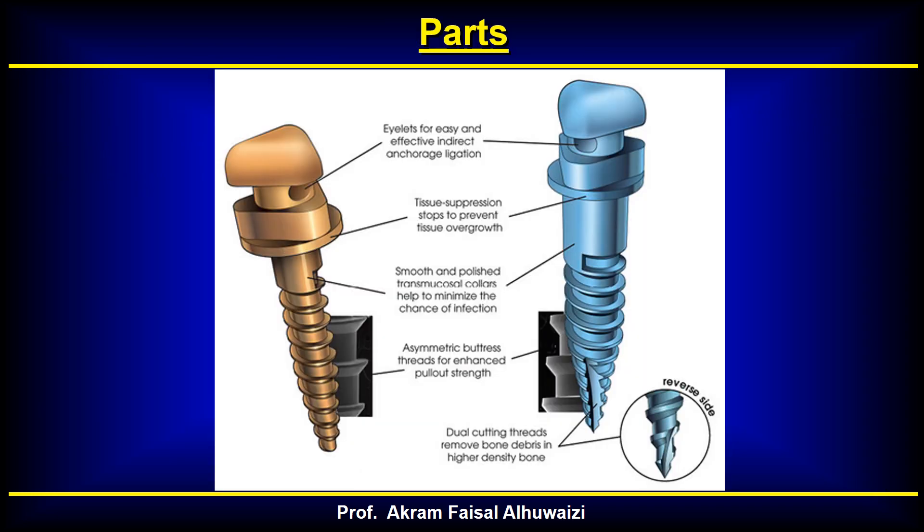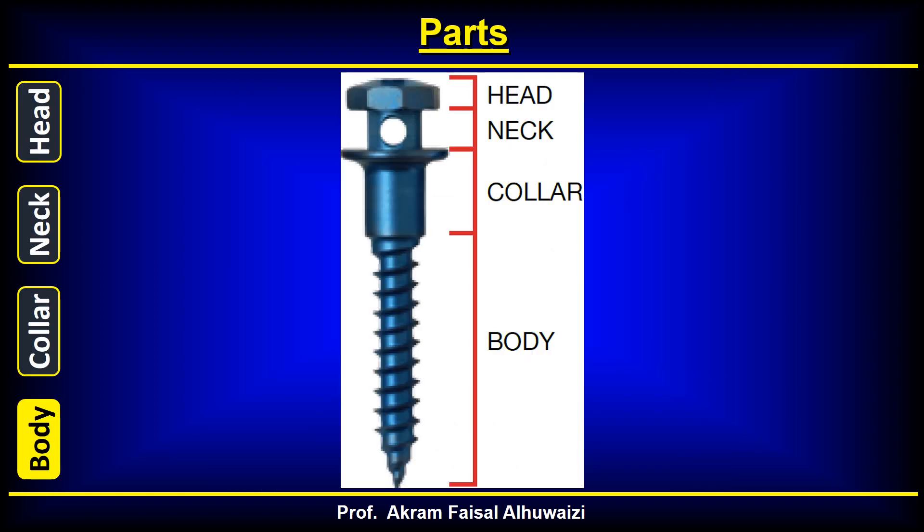Considering the parts of mini implants, they are basically composed of a body, a collar, a neck, and a head. The body is a shaft of metal with a thread going around it, and this body is very polished.